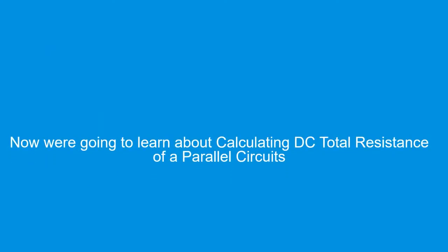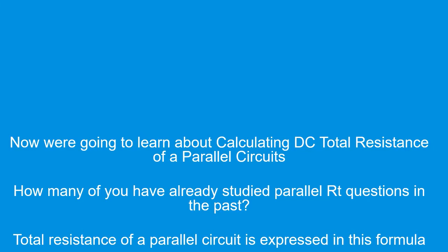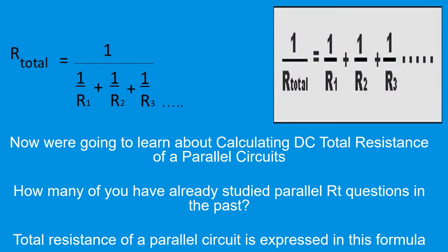Now we're gonna learn about calculating DC total resistance of parallel circuits. We're also gonna learn about calculating voltage drop across an individual resistor in a parallel circuit. The total resistance of a parallel circuit is expressed in this formula: R total equals the reciprocal of (1/R1 plus 1/R2 plus 1/R3) and so on. To get the reciprocal of a number, you divide that number into one. First get the reciprocal of each resistor, then take the reciprocal of that sum, and that gives you the resistance total.